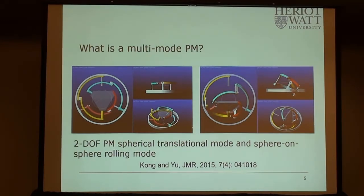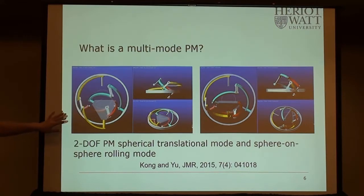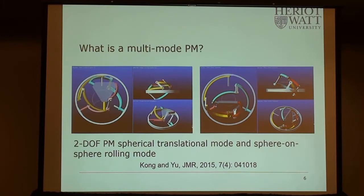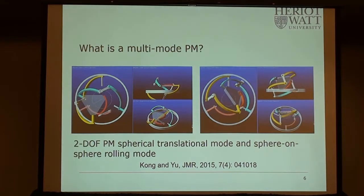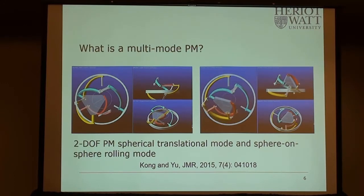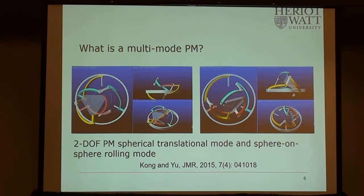I've been working on multi-mode parallel mechanisms. What does a multi-mode parallel mechanism mean? Let's consider one example: a parallel mechanism on the left where one plate translates along a spherical surface—it has two degrees of freedom. The same mechanism can realize a different motion. If you have two balls of the same diameter, one ball rolling over another with a twist—that also has about two degrees of freedom. The motion of the mechanism changes significantly; for example, this one can only realize three-axis translation.